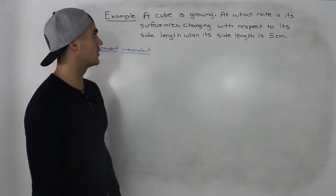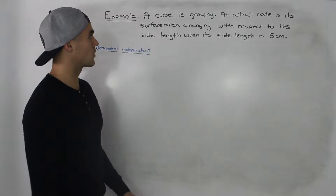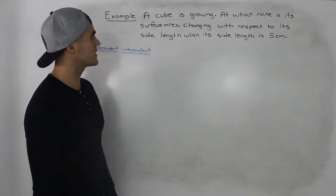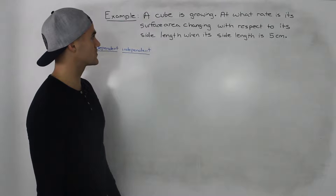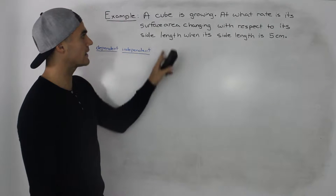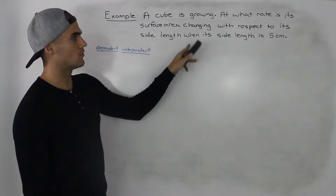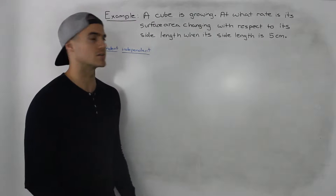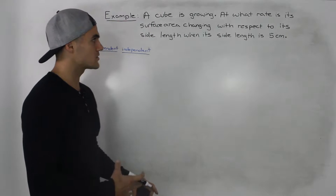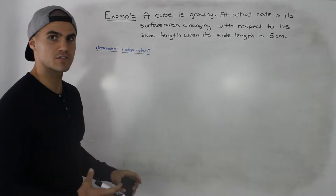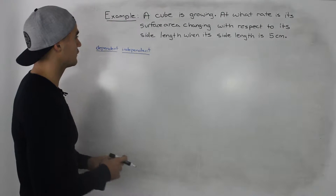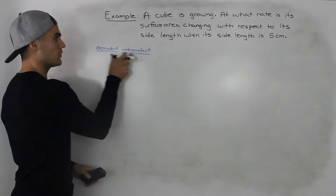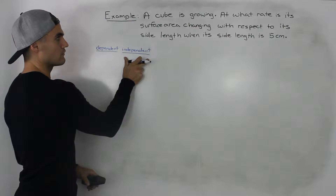Moving on to the next example. A cube is growing. At what rate is its surface area changing with respect to its side length when its side length is five centimeters? So as we did in the previous question, the first thing to figure out is what's the dependent variable and what's the independent variable.